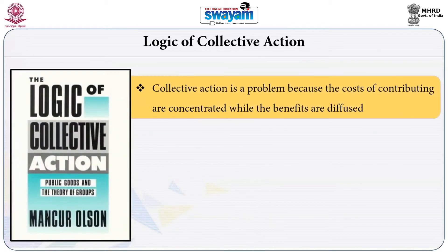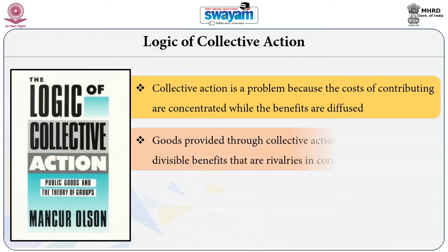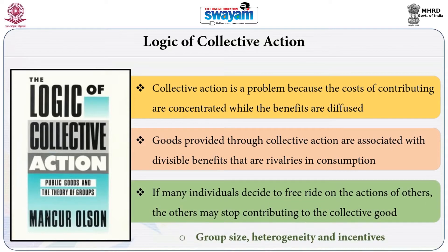The third idea is the logic of collective action — the title of a book written by Mancur Olson in 1965. He argued that collective action is a problem because the cost of contributing is concentrated among few individuals while the benefits are diffused among all members of the community, even those who do not contribute — a phenomenon called free riding. If many individuals free ride on the actions of others, those who contribute may stop contributing to the collective good. Olson also discussed group size and heterogeneity in shaping the possibility of collective action.